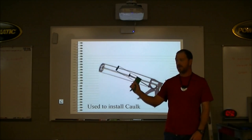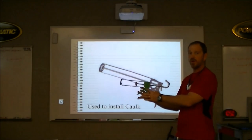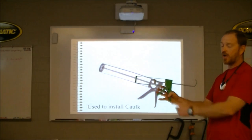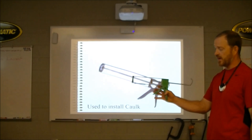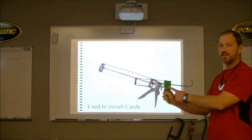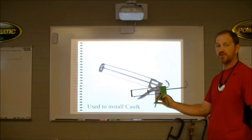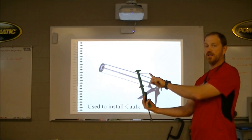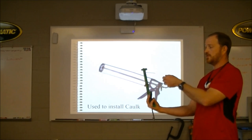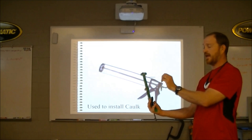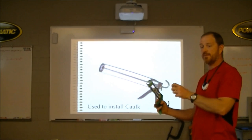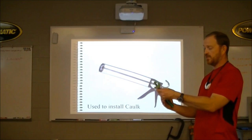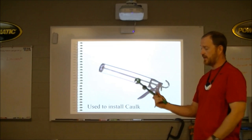Here's a caulking gun. This one has a little hole where you can stick your caulking tube and squeeze it to cut the nose off so you can get the caulk out. It also has a little metal stud that you jam into the caulking tube to break the seal on it — it's a pretty good caulking gun.